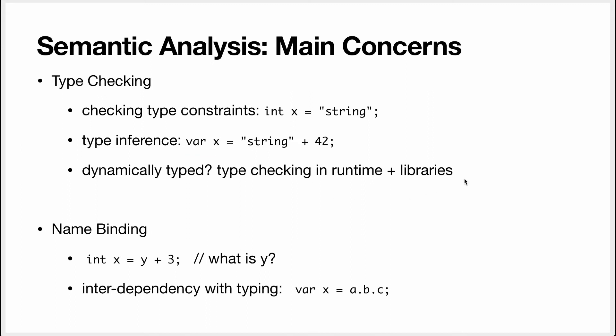You might think that if you do a dynamically typed language, you will avoid all this work. There is some truth to that, but you will need to check types eventually — in the runtime. For language features, if you try to index an array, you need to check that the index is actually an integer. And if you write standard libraries, you'll need to check in the libraries. A really bad language is one that doesn't check anything. If you don't check types in your interpreter, your program will crash with a null pointer exception or class cast exception — a Java stack trace completely useless to the user. Always check types.